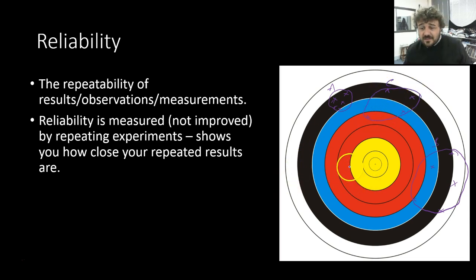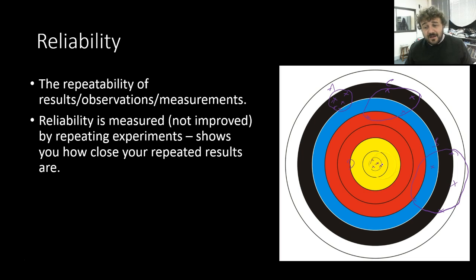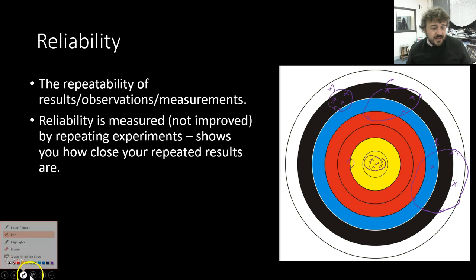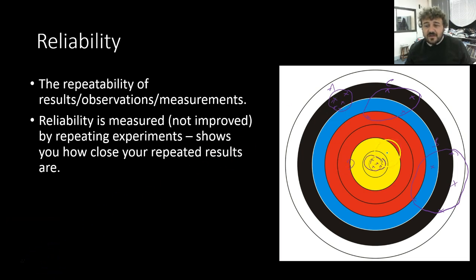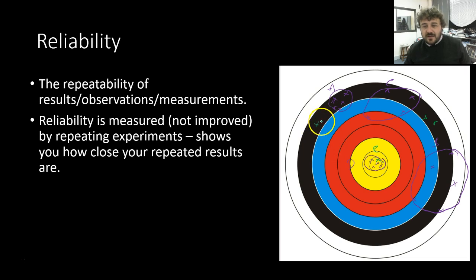In comes Archer D — obviously a much better shot. They shoot one there, the next one is there, then there, then there. From arrow one alone we can't tell how reliable Archer D is — that might have been a fluke. But Archer D fires three more, and all of a sudden we can see that Archer D is actually quite reliable. If Archer E had come in and fired one shot right on target, we'd think they're a genius — except their next shots are all over the place, so Archer E is actually not that reliable at all.